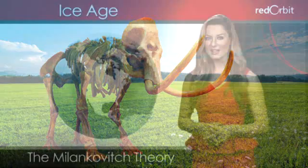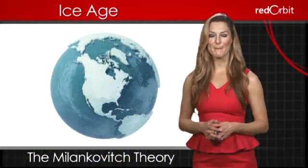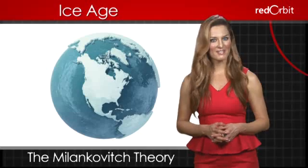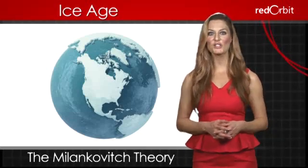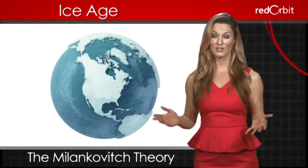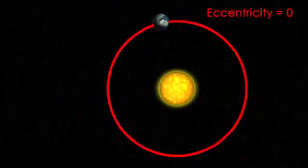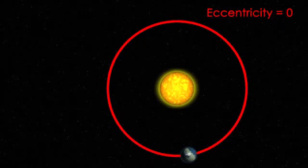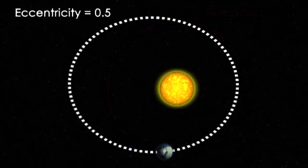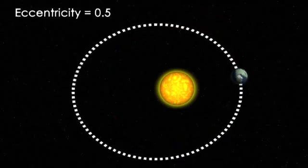The Milankovitch theory by astronomer Milutin Milankovitch suggests variation in the Earth's orbit account for glacial ages. Instead of orbiting the sun in a constant pattern, the Earth wobbles.